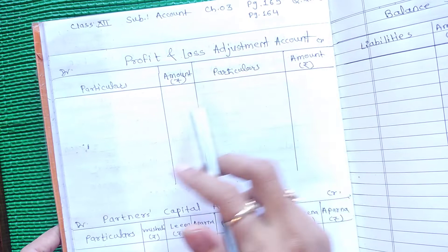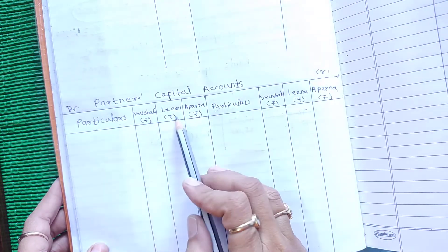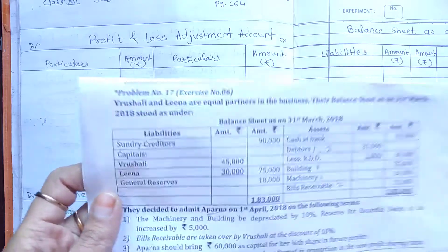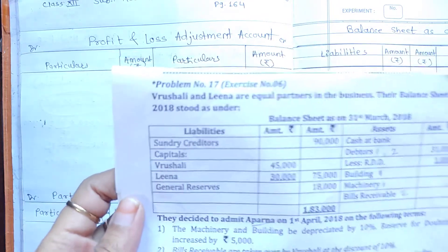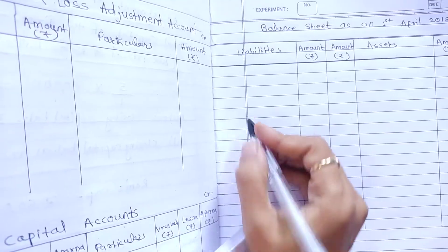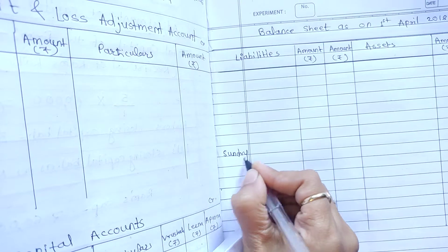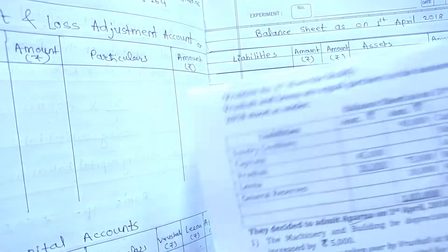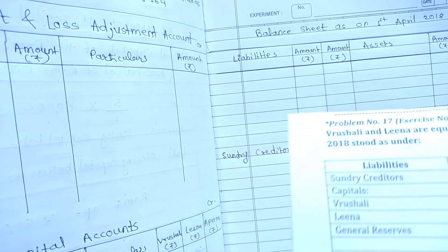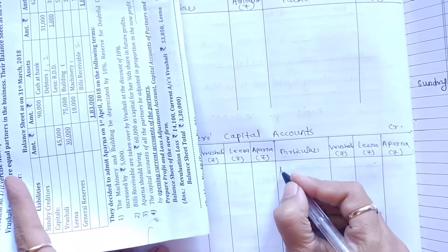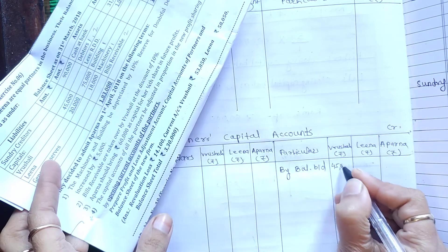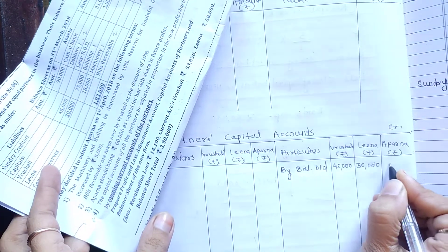In our previous sums, we saw that partners' capital is adjusted in the new profit sharing ratio by cash, bank, or loan. But here it is asked to adjust by opening current accounts of partners — this is a new type of adjustment. Now prepare: Profit and Loss Adjustment Account, Capital Account of Partners, and Balance Sheet of the new firm. Draw the format: P&L Adjustment Account, Partners Capital Account with columns for Vrushali, Lina, Aparna (both debit and credit), and Balance Sheet as on 1st April 2018.